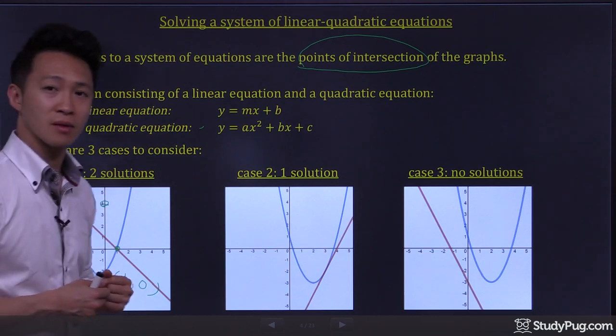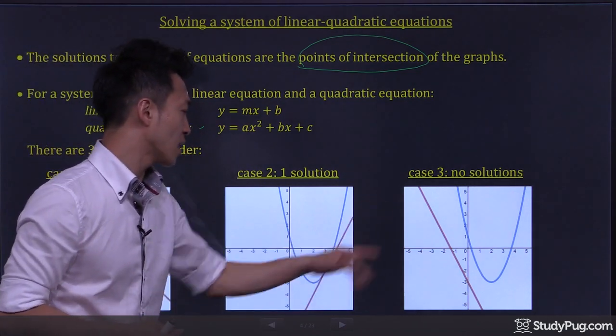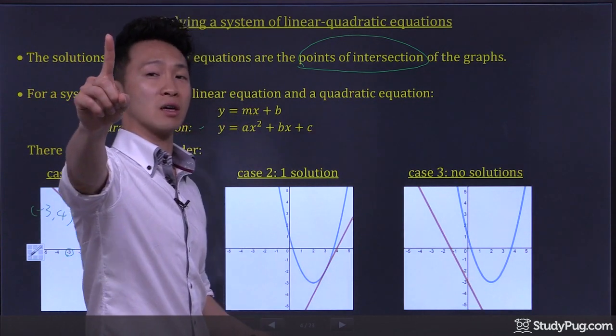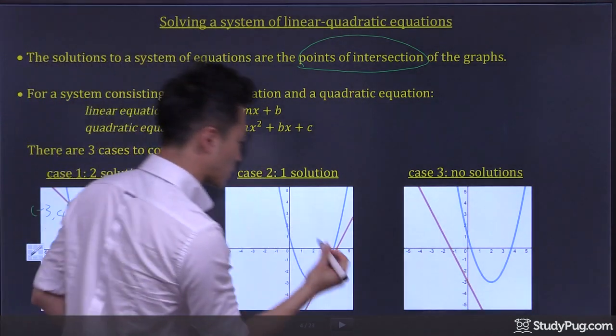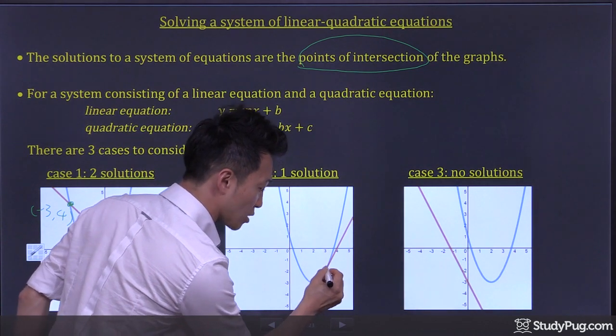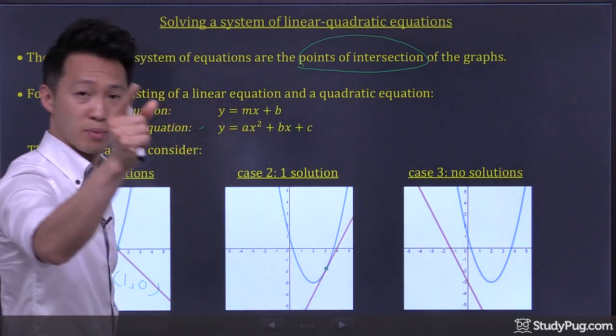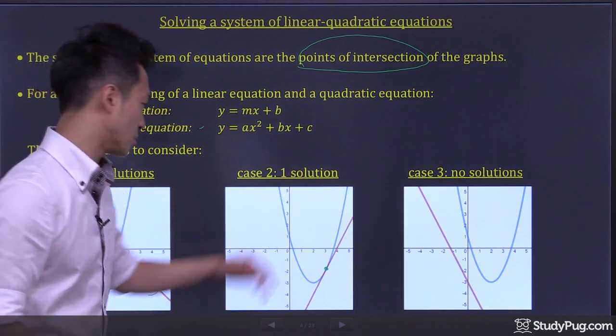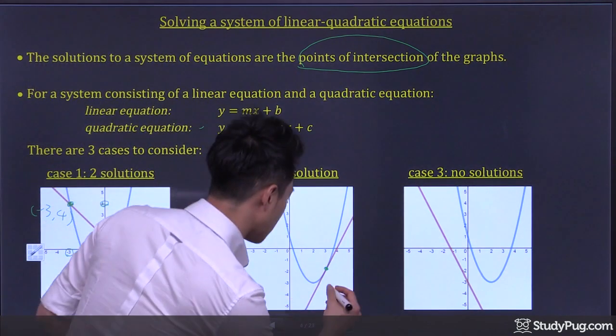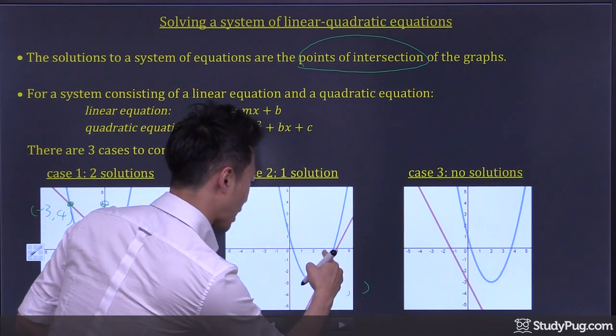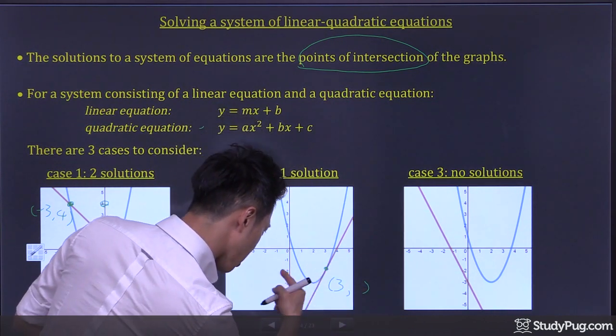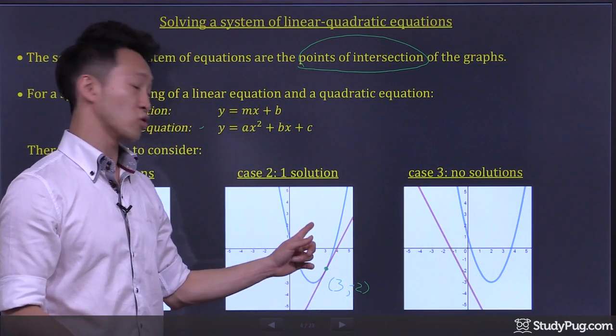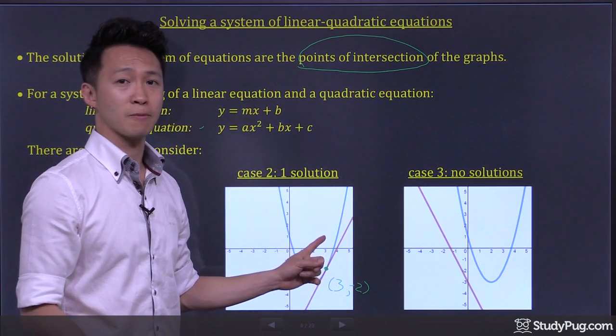Now, a straight line and a parabola can also have only one point of intersection. That would be case number two, where they intersect at one point, no more, no less, just one point. And that point represents the solution to the system. So in this case, it looks like the point is at x equals 3, y equals negative 2. So 3 and negative 2 will be the solution to the system of equations.